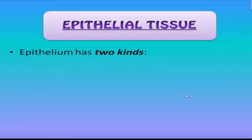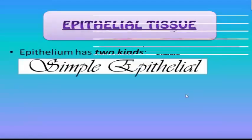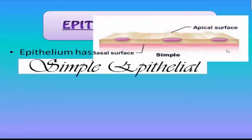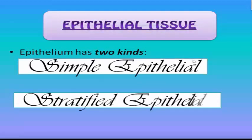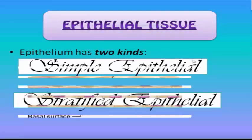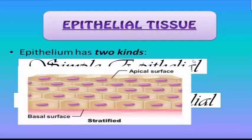Epithelial tissue has two kinds. First, we have simple epithelial, which is composed of only one layer of tissue — as you can see, this is the apical surface and this is the basal surface. The second is stratified epithelial, which has two or more layers of tissue. As you can see in the picture, it has five layered tissues.